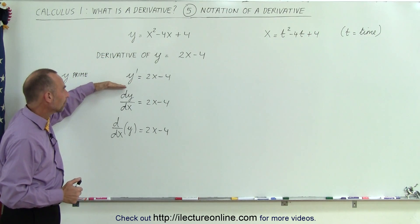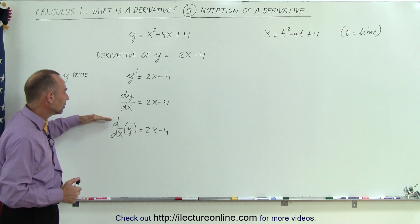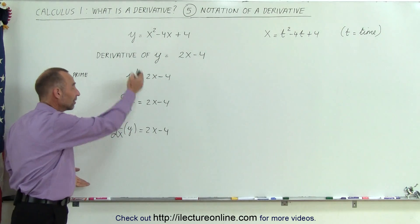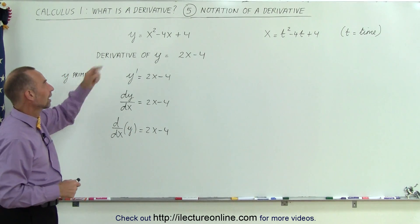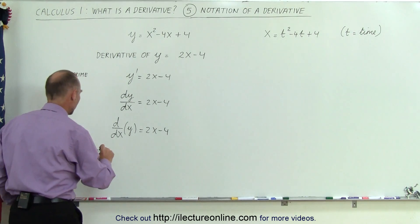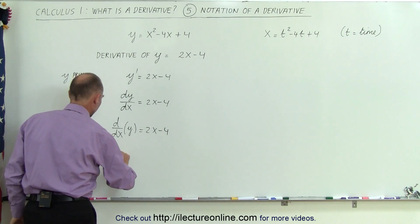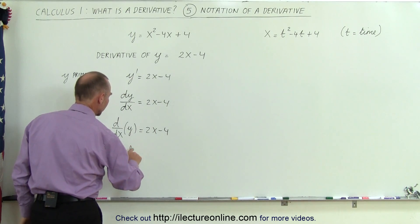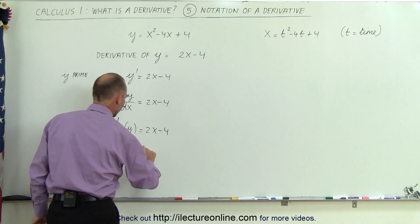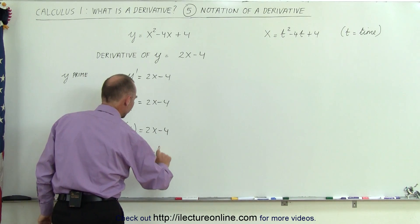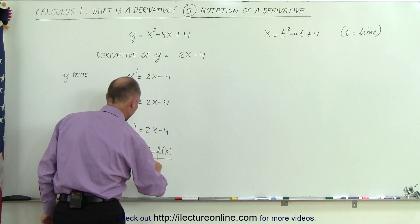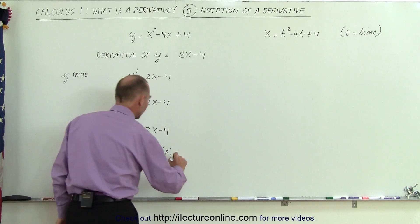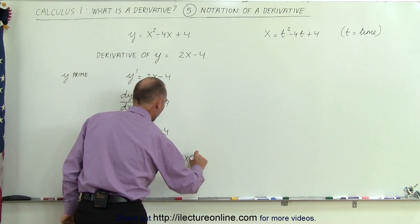Remember, all of these mean exactly the same thing: the derivative of y, y prime, dy/dx, and d/dx of y — they all mean exactly the same thing, and in every case it equals 2x minus 4 for that particular function. Next, we can also express the derivative as the limit as delta x goes to 0 of the function evaluated at x plus delta x minus the function evaluated at x, all divided by delta x. That is the definition of the derivative, which also gives us 2x minus 4.